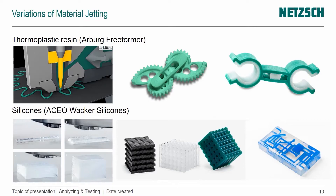The Arburg process uses a thermoplastic resin — any resin you want — and is more based on the injection molding principle. A screw plasticizes and homogenizes the material, then a valve opens and closes very rapidly to dispense droplets instead of injecting a full cavity. You can see that in the schematic: the liquid thermoplastic is fed in, and by opening and closing the valve, droplets are placed next to each other, solidifying and fusing via heat conduction.